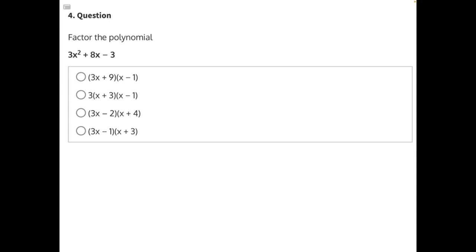Factor the polynomial. To factor a polynomial with an a value greater than 1, we need to do something called factoring by grouping.